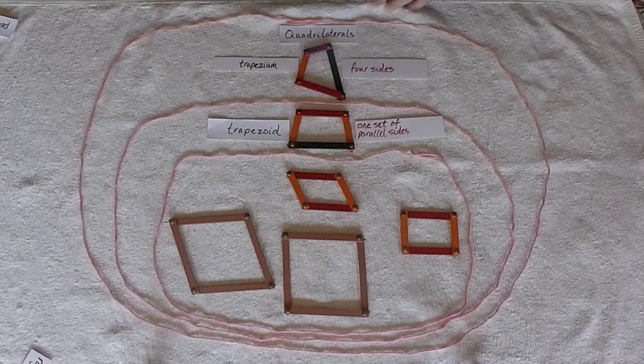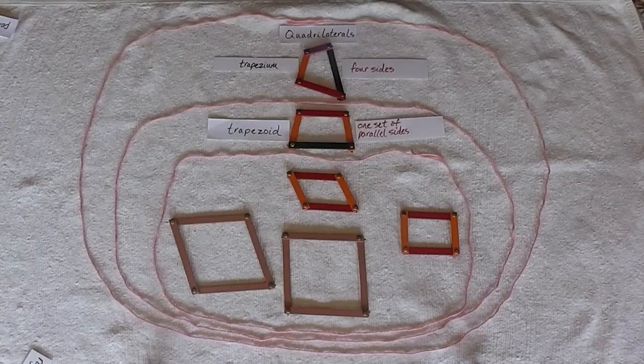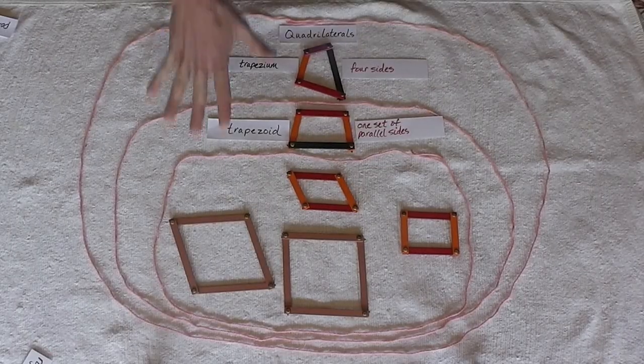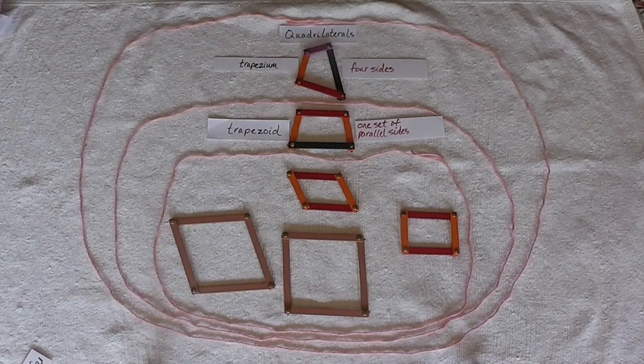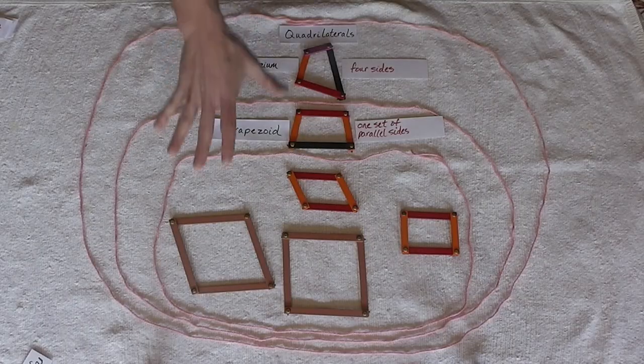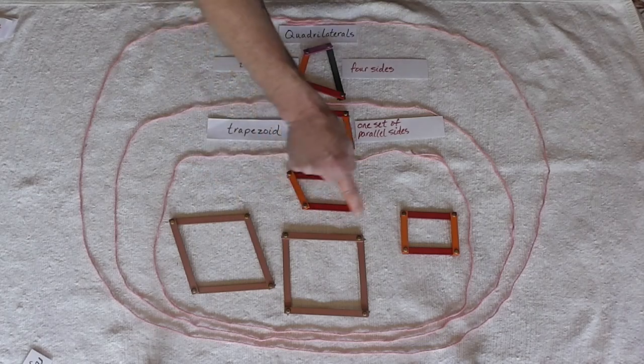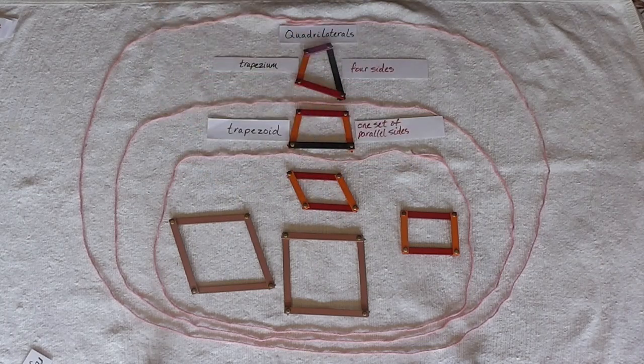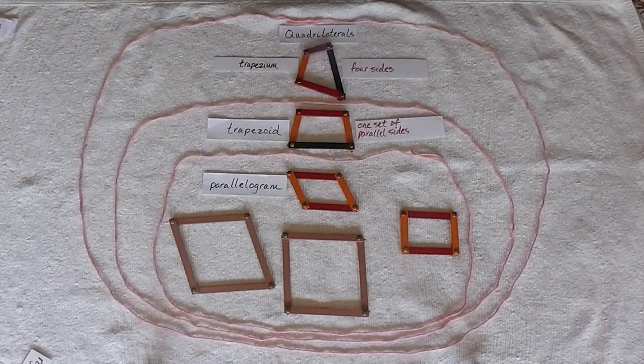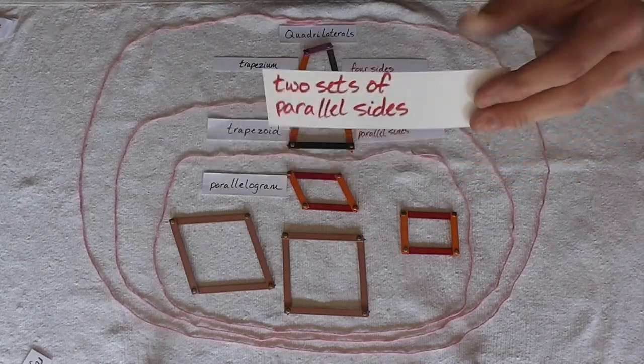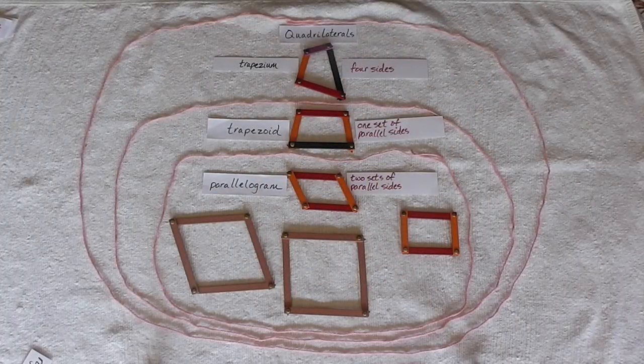But look at everything inside of here. This has one set of parallel sides. But everything inside of here has two sets of parallel sides. Everything in here, parallelogram, rhombus, square, rectangle, they could all be considered parallelograms. Because the parallelogram has two sets of parallel sides. So everything in here is a parallelogram because it has two sets of parallel sides.